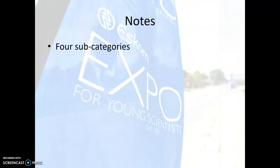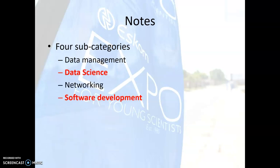The computer science category has four subcategories: data management, data science, networking, and software development. The type of project you are most likely to judge will be either data science or software development — data management and networking projects are somewhat rare. Note also that there can be some overlap between subcategories; for example, a data science project would likely involve coding in R or Python, and a software development app might involve data management through linking to MySQL or Access.